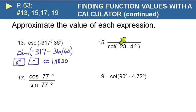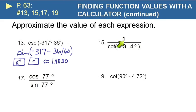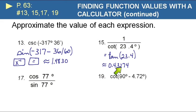For 1 over cotangent of 23.4 degrees: cotangent is the reciprocal of tangent, so the reciprocal of the reciprocal of tangent is simply tangent. Enter it in the calculator as tangent of 23.4 — it should be approximately 0.43274.